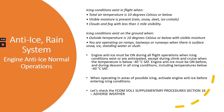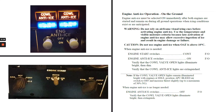Let's check the FCOM Volume 1, Supplementary Procedure Section 1-6, Adverse Weather. Engine anti-ice must be on immediately after both engines are started and remain on during all ground operations when icing conditions exist or are anticipated. Warning: do not rely on airframe visual icing cues before activating engine anti-ice. Use the temperature and visible moisture criteria, because late activation of engine anti-ice may allow excessive ingestion of ice and result in engine damage or failure.